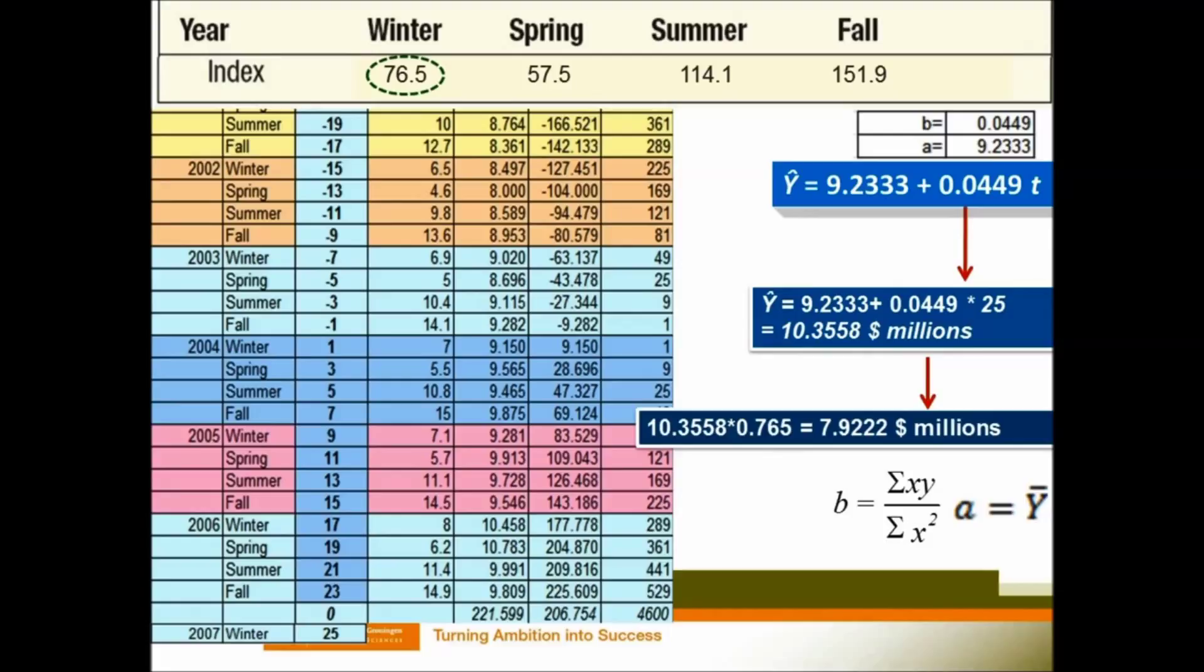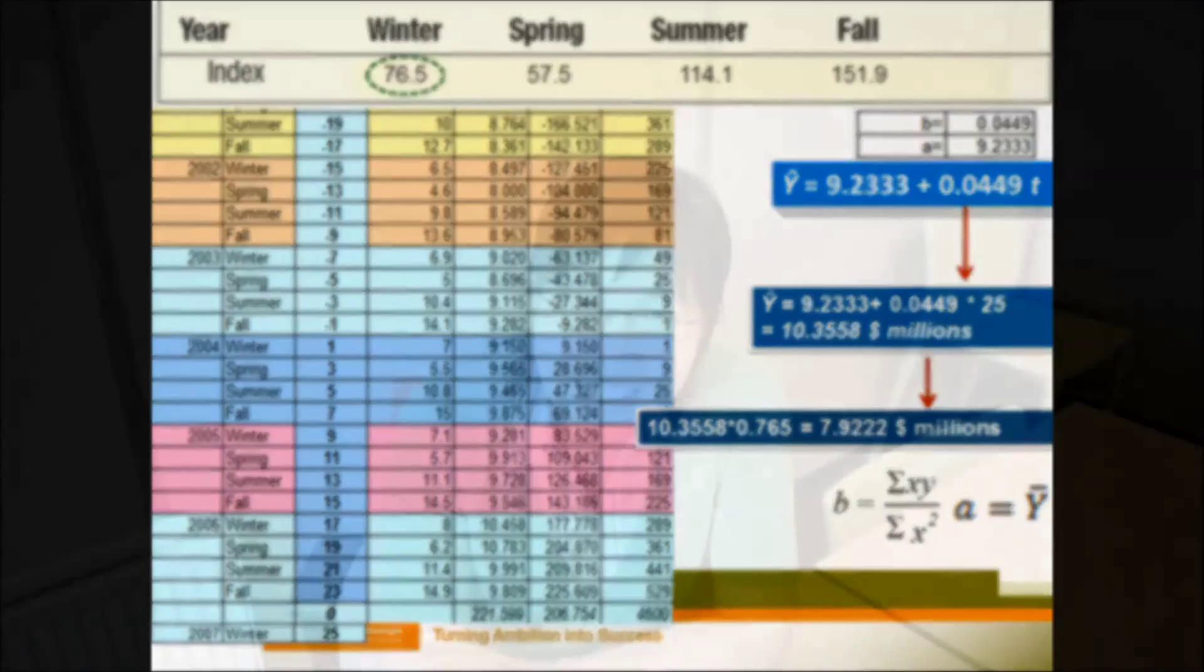Because we have the seasonalized prediction, we can make sure that if we predict the winter sales in 2007, we will not predict too much or we will not predict too few. Because we have taken the seasonal index number into account, our prediction is very reasonable. The seasonalized prediction.